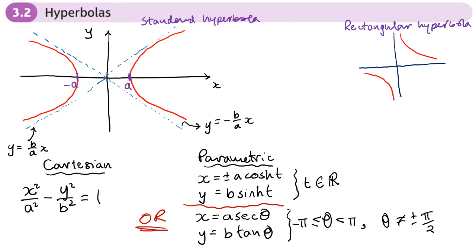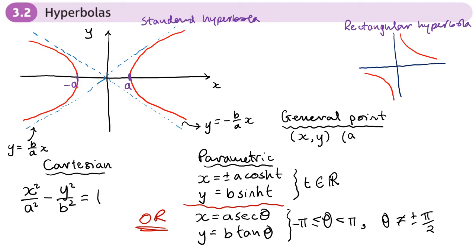For a general point P on the hyperbola: in Cartesian form it is simply (x, y). Using the hyperbolic parametric form it is (plus or minus a cosh t, b sinh t). Using the alternative sec-tan form it is (a sec theta, b tan theta).